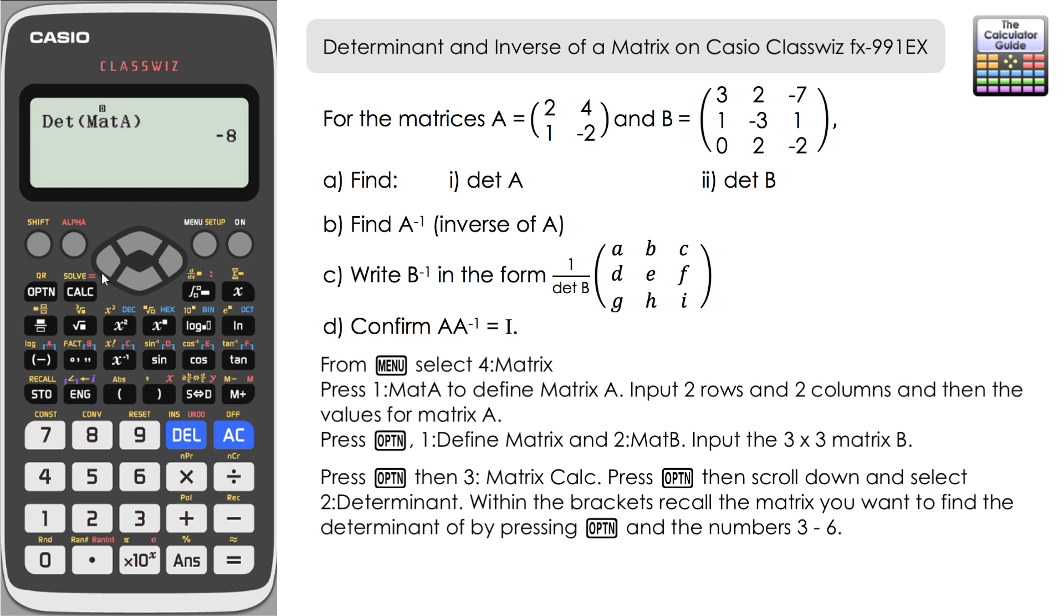Let's try that again with matrix B. Option down to determinant, and then we want option and then matrix B which is 4, close the bracket, and then press equals. For matrix B the determinant is 2.